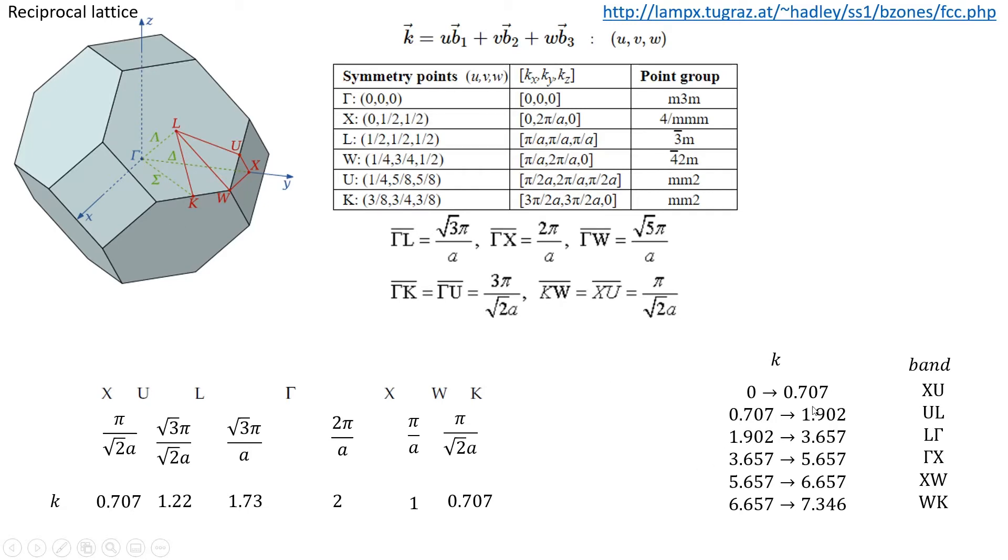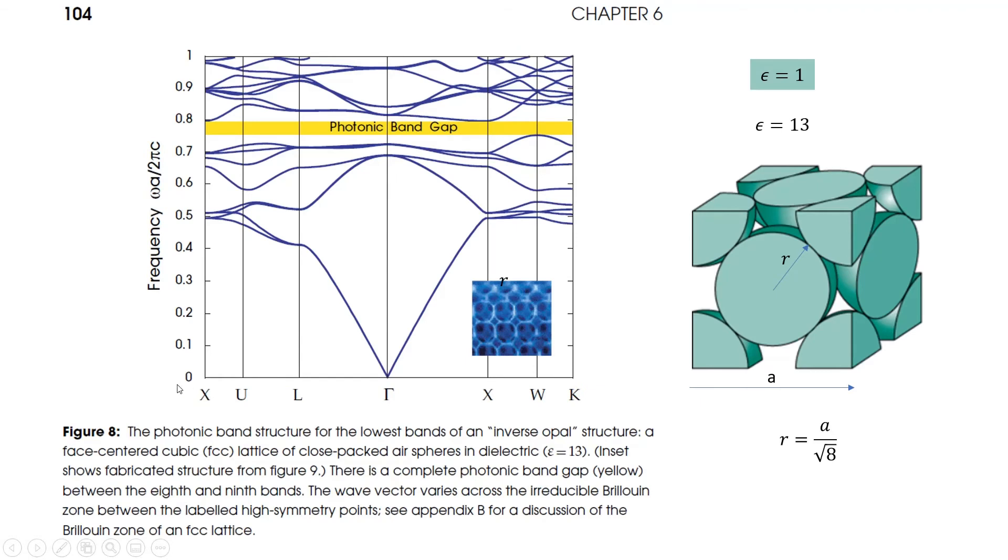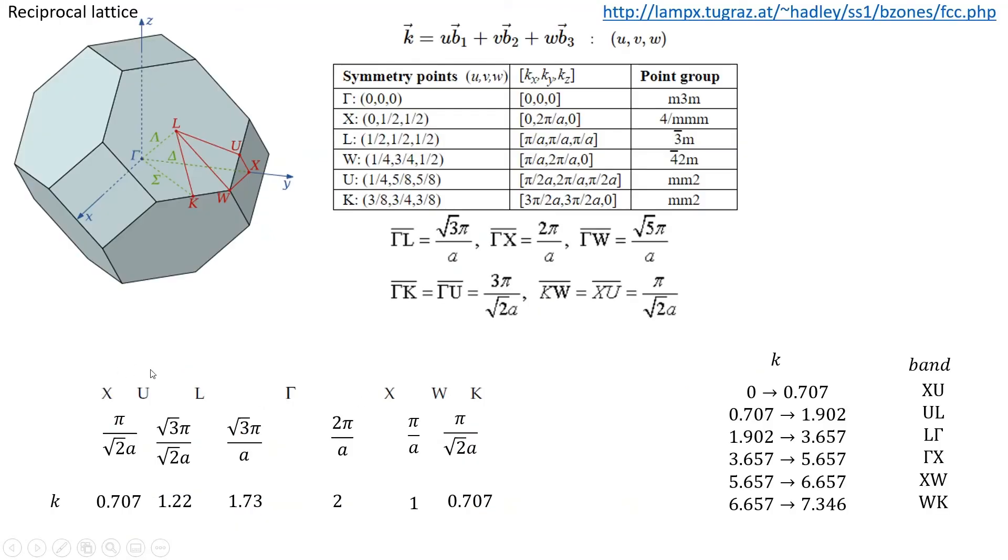Why I chose this particular value of k here is because I need to plot a dispersion diagram exactly similar to this. As you see here, the length of X to U is different from U to L, from L to gamma, and so on.